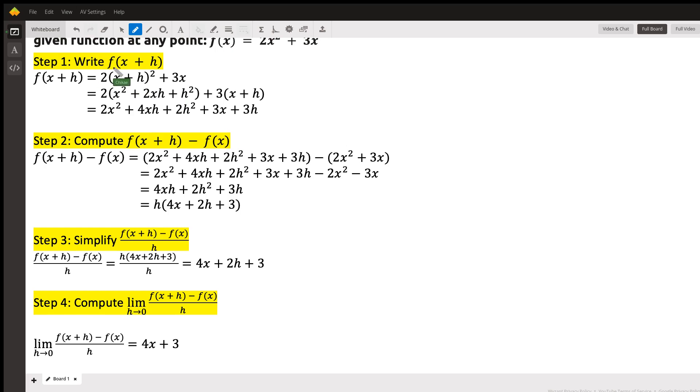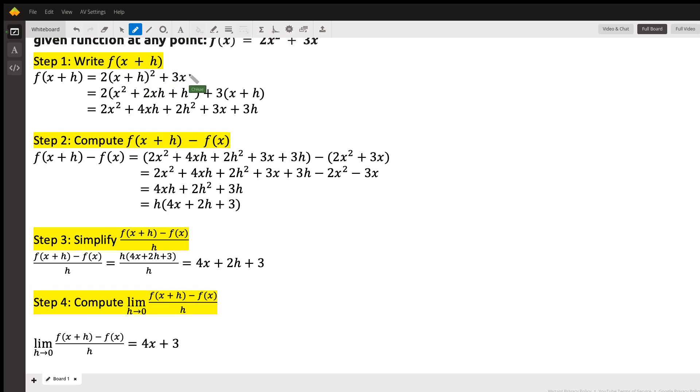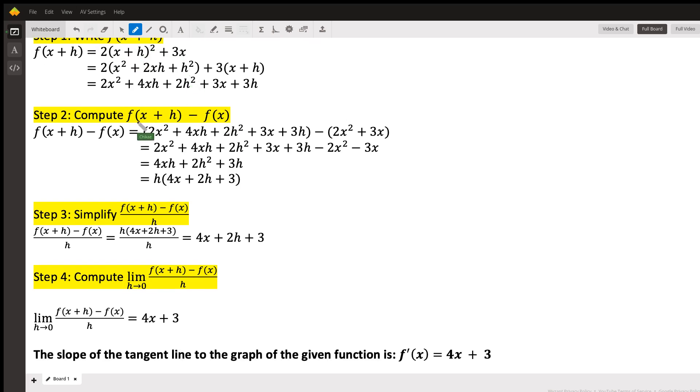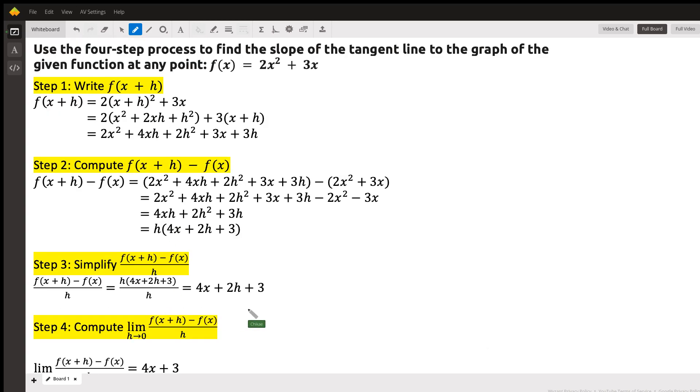So first, we're going to write or find f(x + h), then we'll do f(x + h) - f(x). Then we're going to simplify the quotient of what we just found, f(x + h) - f(x) all over h. And then we'll calculate the limit as h goes to zero. So let's start with the first step, f(x + h). We're going to find f(x + h).